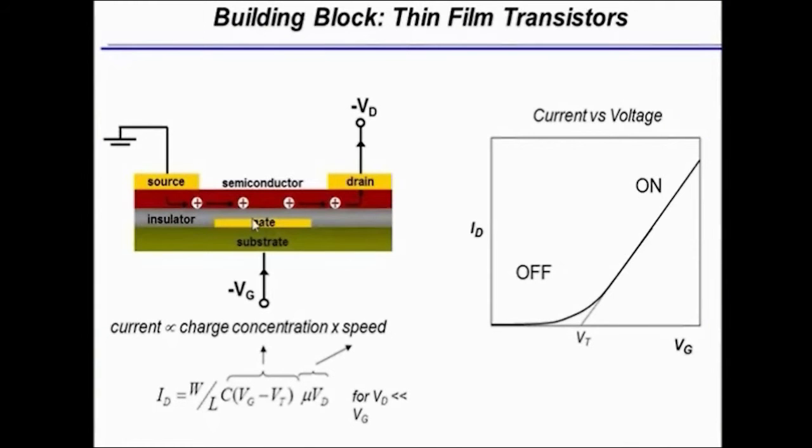A third electrode called the gate is insulated from the semiconductor layer. The idea is that application of a voltage to the gate causes charge accumulation or depletion in the semiconductor layer because the gate is capacitively coupled to the semiconductor.